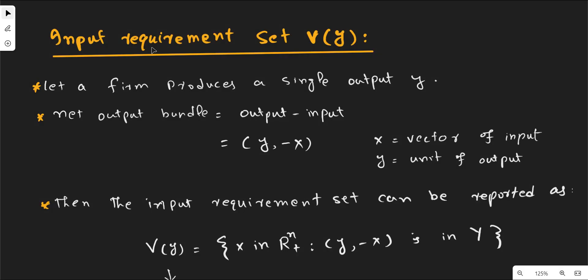In this video lecture we discuss the input requirement set, its concepts, and its application in applied microeconomics. To understand the input requirement set, it is supposed that a firm produces a single output.